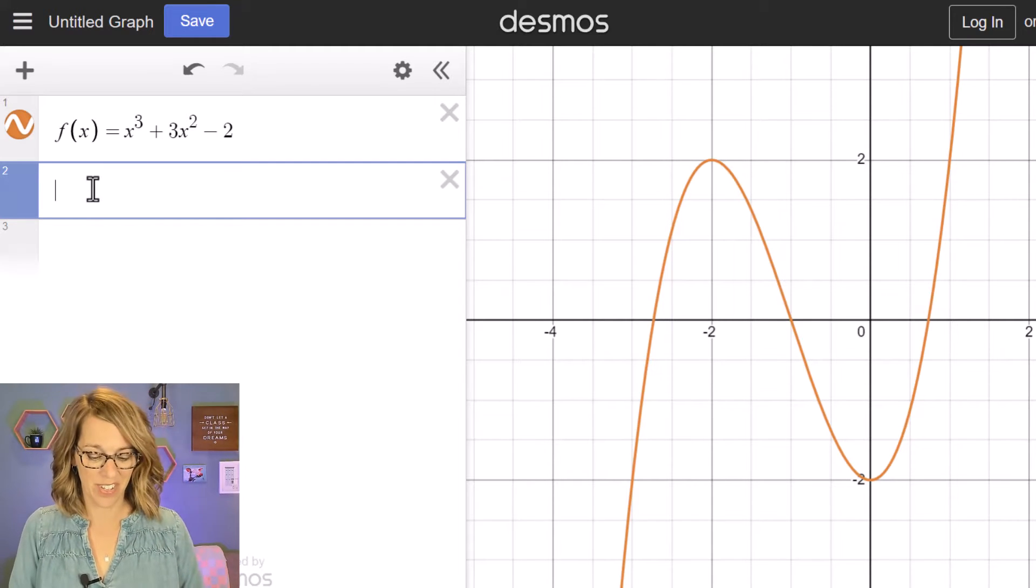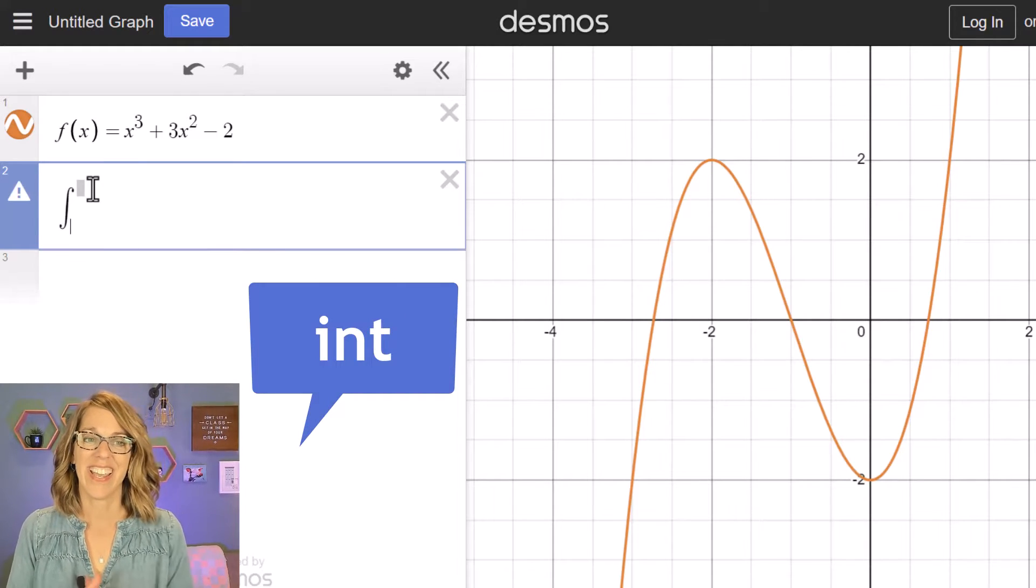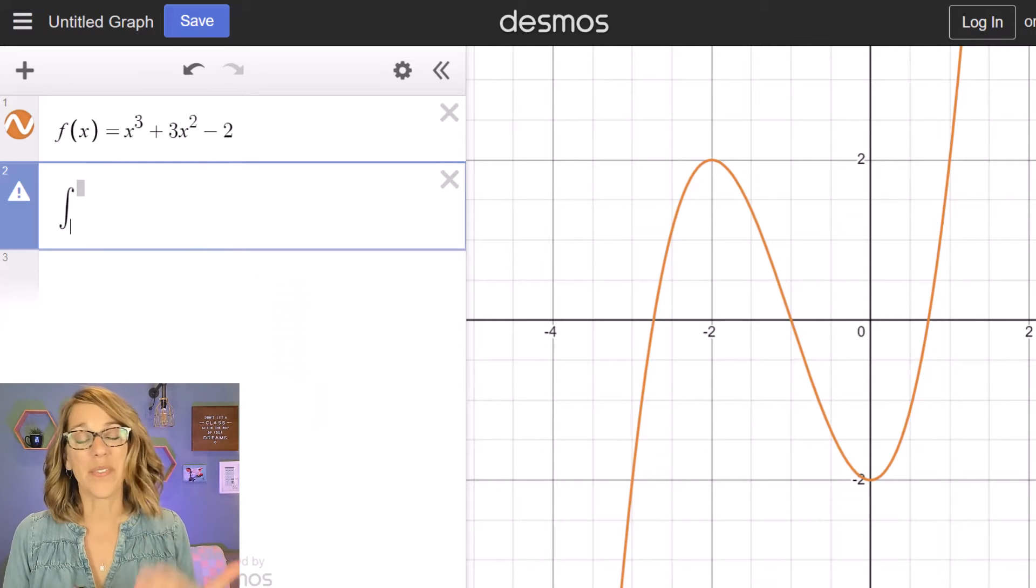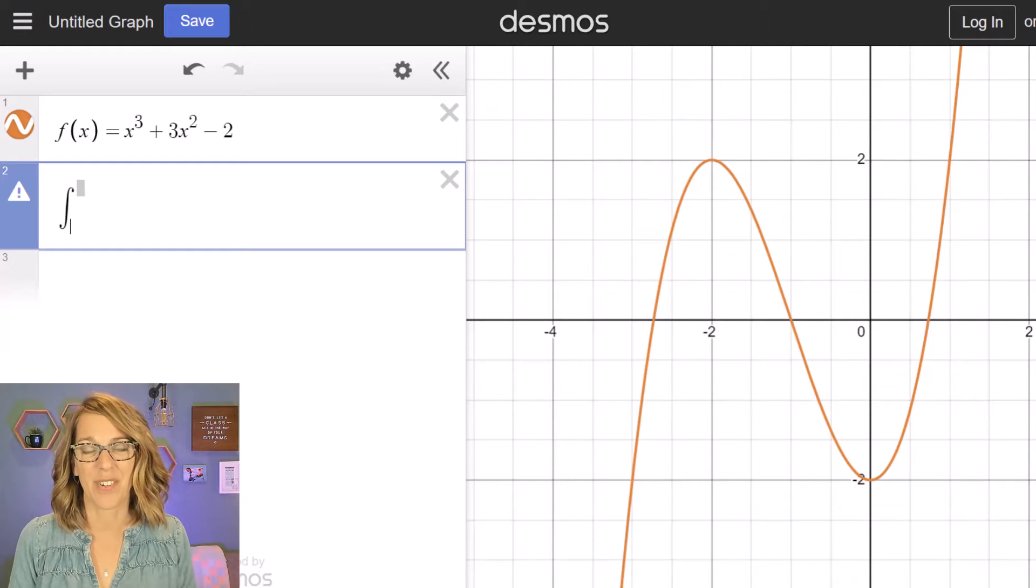Now to get the integral, I'm just going to grab an empty cell and start typing integral. So I-N-T and then up pops my integration symbol. Desmos will only do a definite integral. There's a little bit of a workaround, but for the most part just a definite integral.